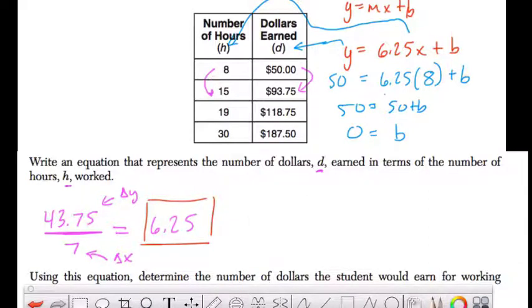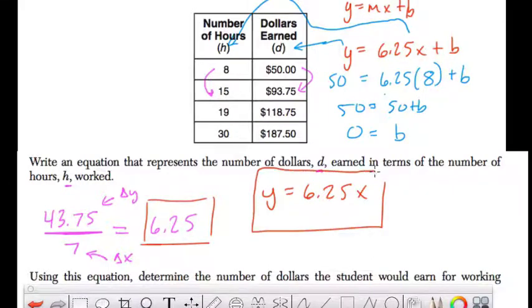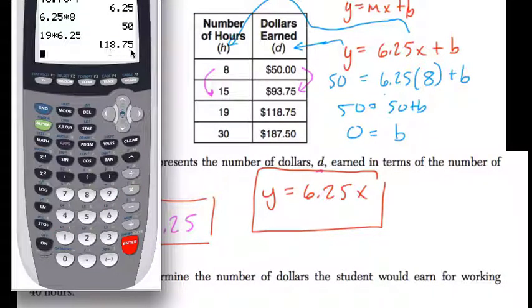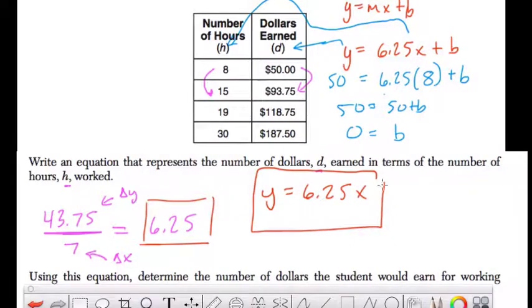So that means our equation is Y equals 6.25X plus 0, or just Y equals 6.25X. You can test that here. This means that if this is true, we multiply our number of hours by 6.25 and we get the dollars earned. So 19 times 6.25 should equal 118.75, and it does. Just replace it with the appropriate variables and you're finished.